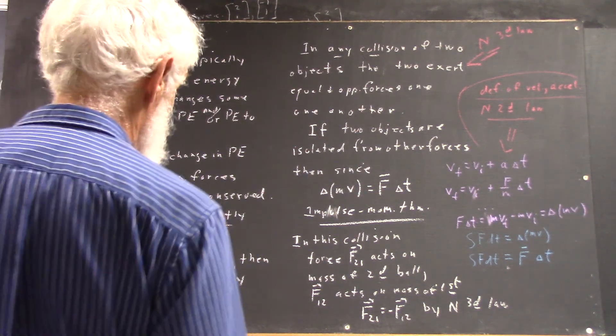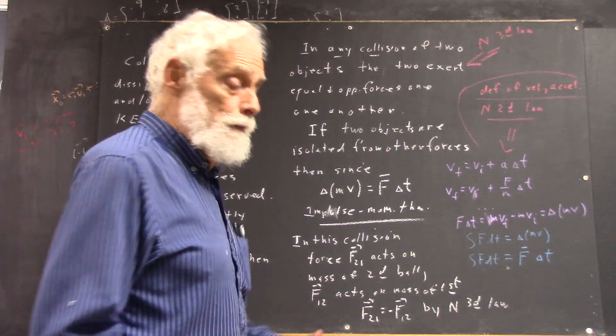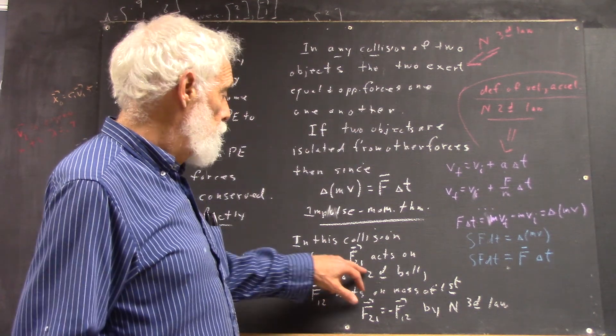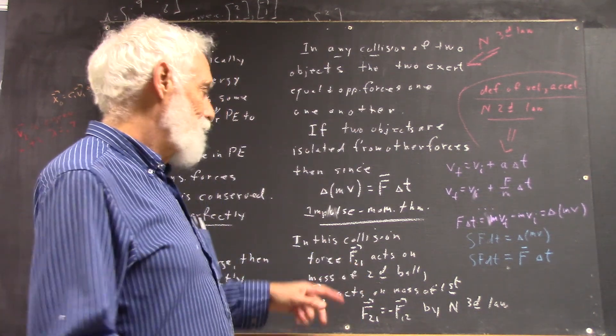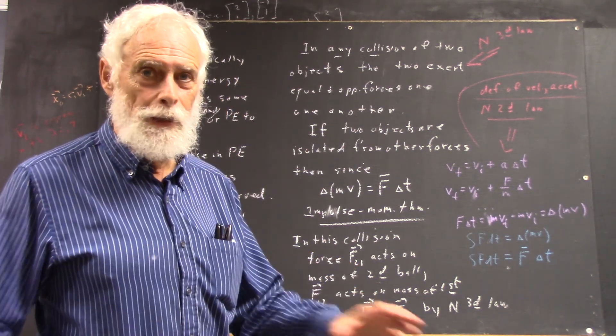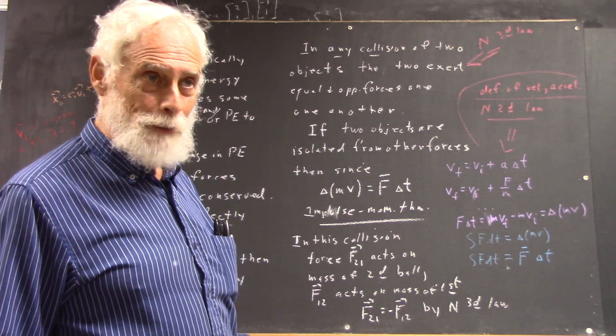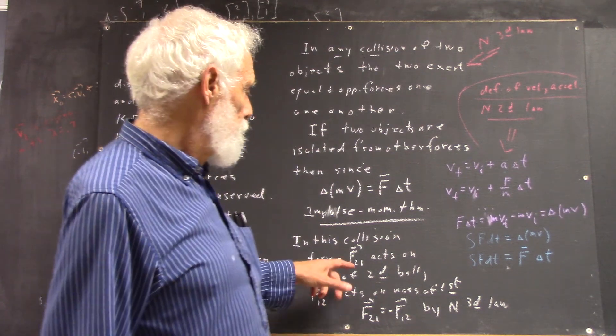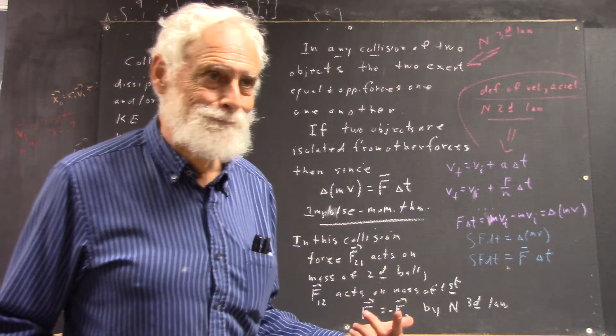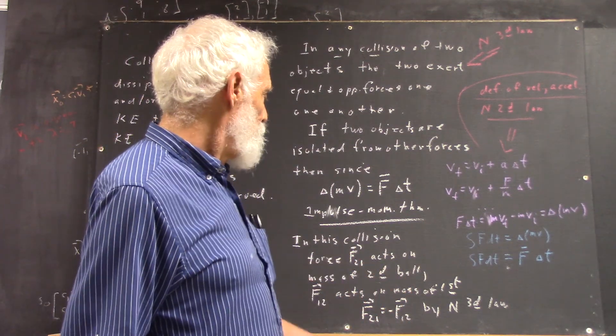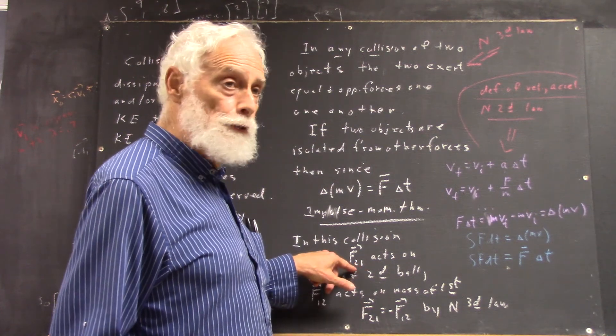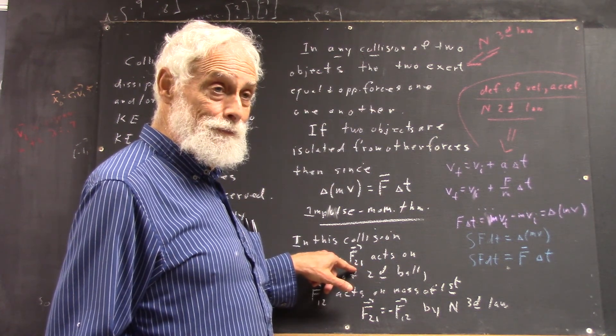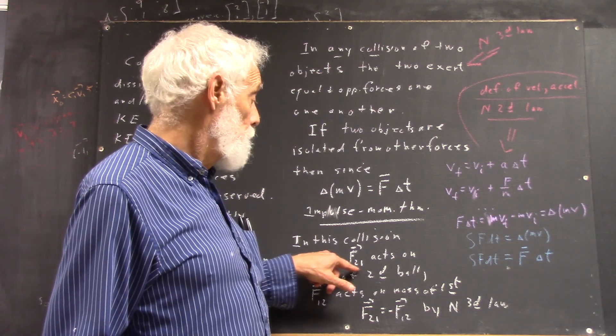Okay, in this collision, we have force F2-1, which is... and there's a convention for these subscripts that I never get right, except by dumb luck. Maybe I got it right this time. I never remember if it's 1-2 or 2-1.